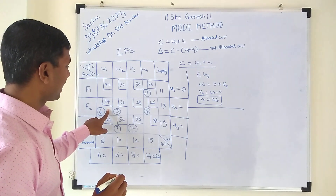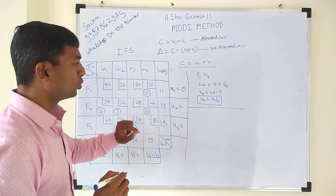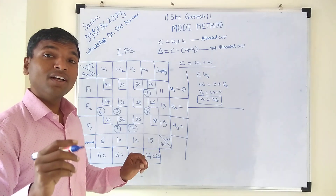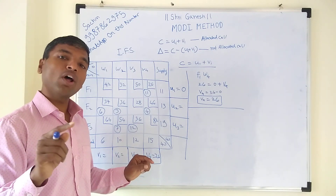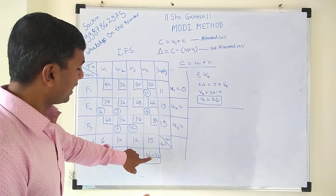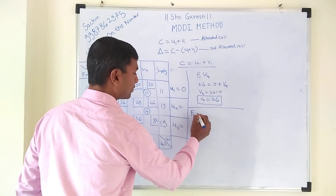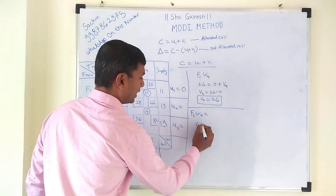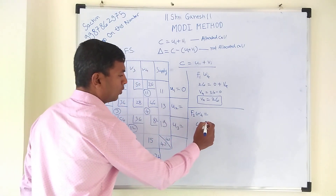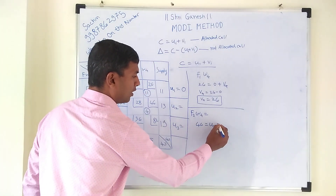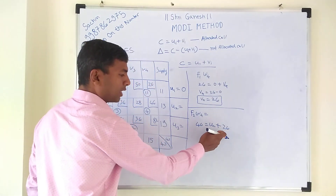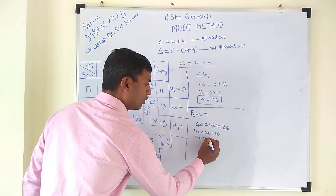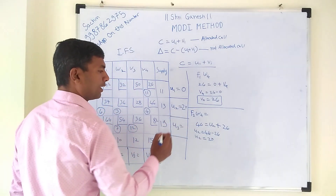For the next step, choose an allocated cell where at least one ui or vi value is already known. F2W4 has v4 known, so we go for that. The cost of F2W4 is 46. So: 46 = u2 + 26, which gives u2 = 46 − 26 = 20. We write u2 = 20.